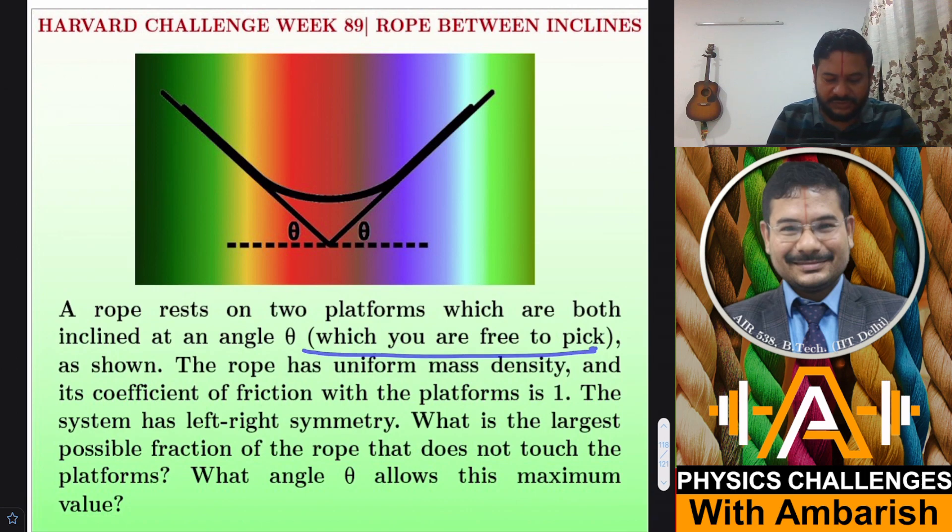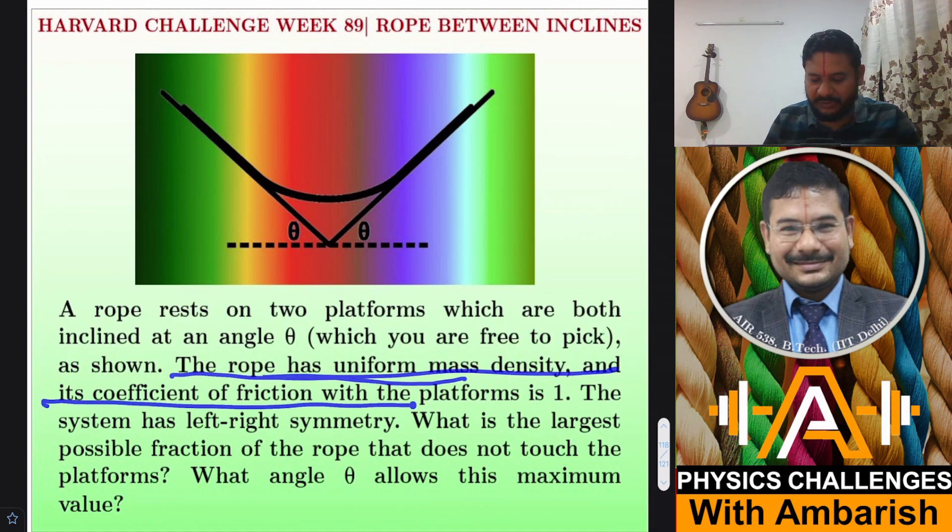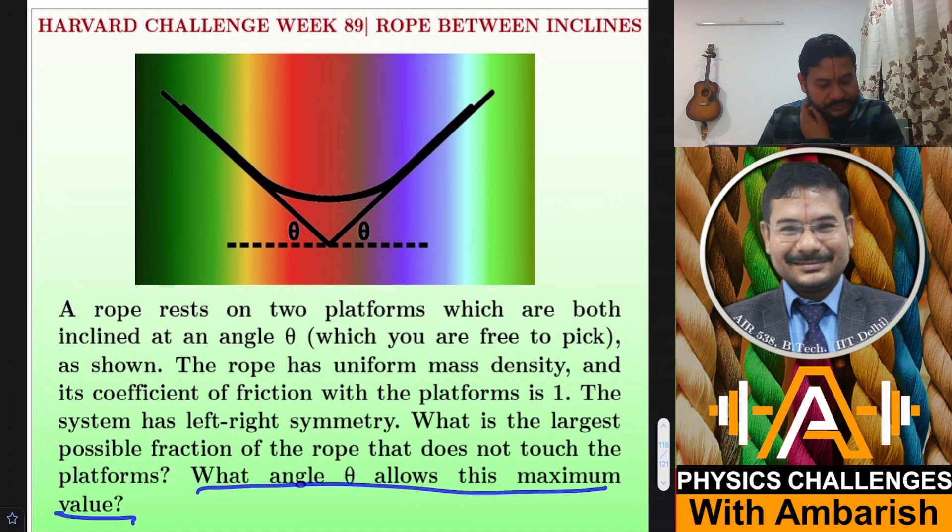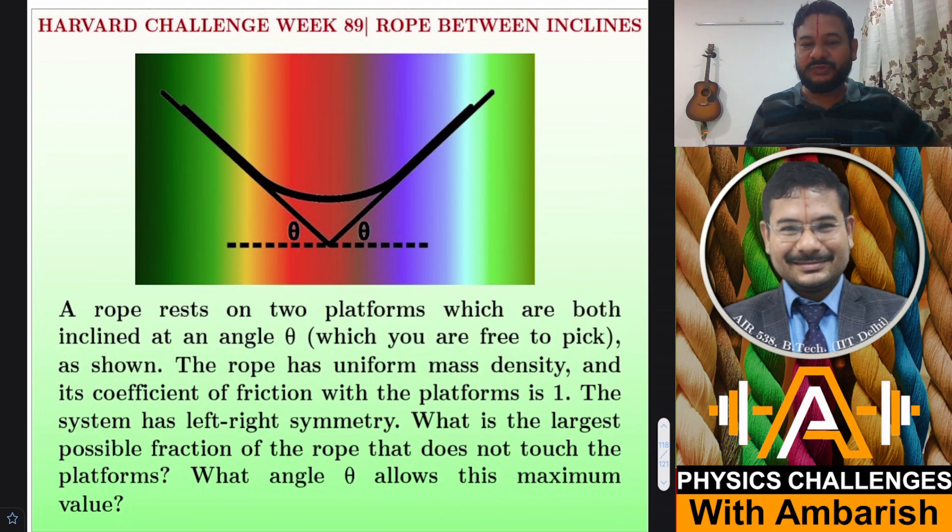The rope has uniform mass density and the coefficient of friction with the platform is 1, so mu equals 1. The system has left-right symmetry. What is the largest possible fraction of the rope that does not touch the platform? We want to maximize this fraction which is not touching the platform. What angle theta allows this maximum value? So we need to find out f and we also need to find out the theta for which this f is maximum.